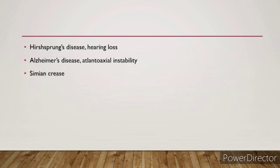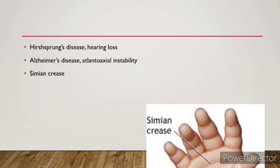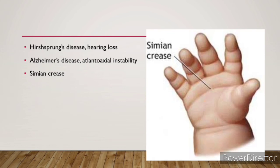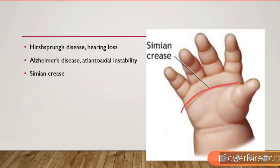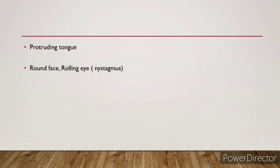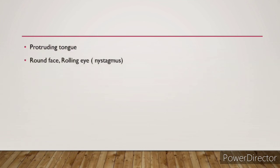Hirschsprung's disease chances are increased in Down syndrome patients, along with hearing loss, Alzheimer's disease, atlanto-axial instability, and simian creases — which you can see clearly in the diagram. Other features include protruding tongue, round face, and rolling eyes which is nystagmus. Not all features are seen in a single patient; different features appear in different patients.